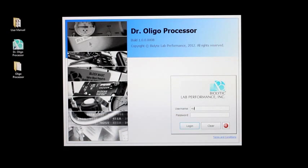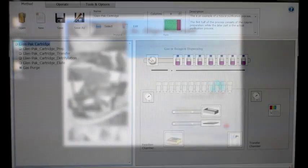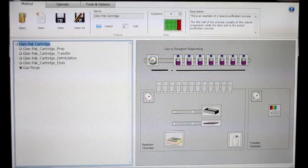This is the main login screen for the Dr. Oligo Processor software. A main benefit of our software is that it allows multiple users to have different levels of accessibility. This is the main user interface for the Dr. Oligo Processor software.